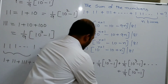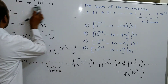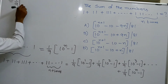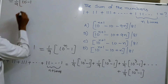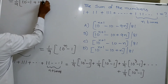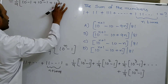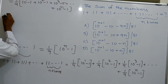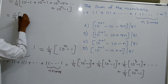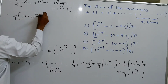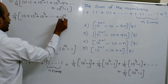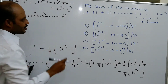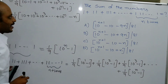You observe that 1 by 9 is the common factor everywhere. By making 1 by 9 common, you get 1 by 9 into [(10 power 1 minus 1) plus (10 squared minus 1) plus (10 cubed minus 1) plus and so on plus (10 power n minus 1)]. This is 1 by 9 into [10 plus 10 squared plus 10 cubed plus and so on plus 10 power n], and we have n terms of minus 1, so minus n overall.